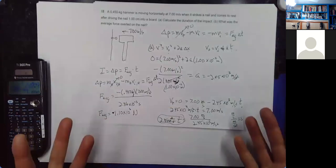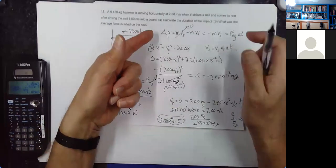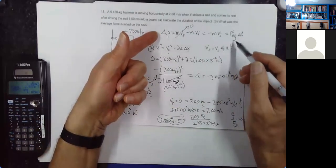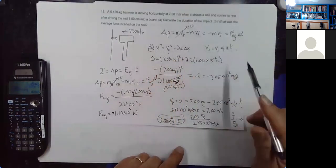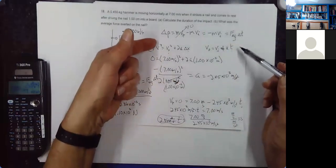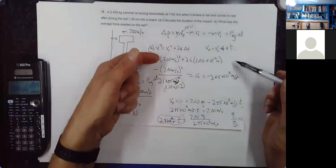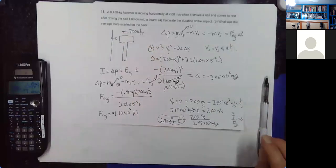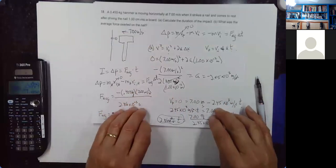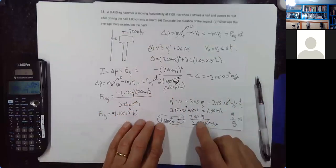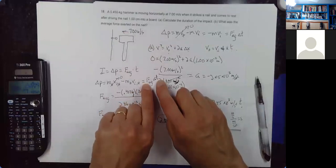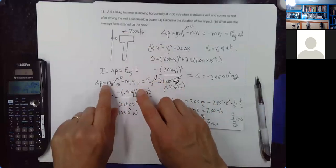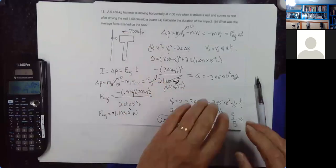We get about −1.10 × 10³; the minus sign tells us the direction, meaning the force is in the direction opposite the motion. The units: kilogram·meter per second divided by seconds gives kilogram·meter per second squared, which is Newtons. So an 1,100-Newton force is what's exerted on that hammer — and by Newton's third law, on the nail. To use momentum to find that average force, we first had to figure out how long the impact lasted by going back to the constant acceleration equations. Once we knew the time, average force times time interval equals the change in momentum.